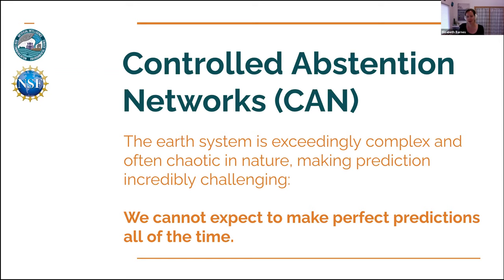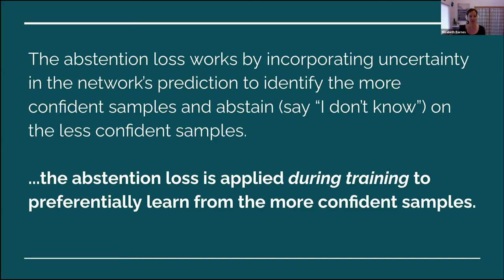We cannot expect to ever make perfect predictions all of the time — the system is just too complicated. When we apply machine learning methods, we tend to think of making perfect predictions as the goal. But I want to challenge that concept: in my case, we don't think we're ever going to make perfect predictions, so let's try to focus on those predictions that we can make well. The abstention loss works by incorporating uncertainty into the network's prediction and allows the network to identify the more confident samples and abstain — say 'I don't know' — on the less confident samples.